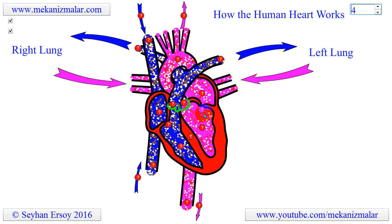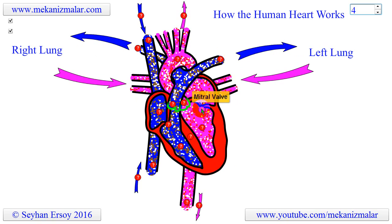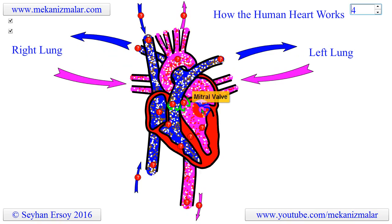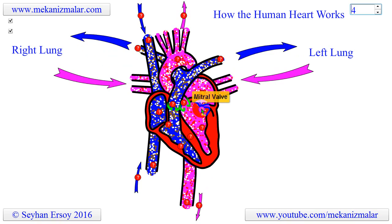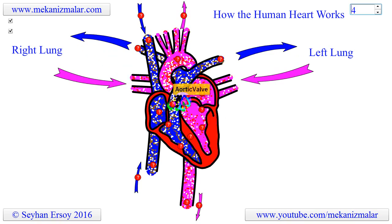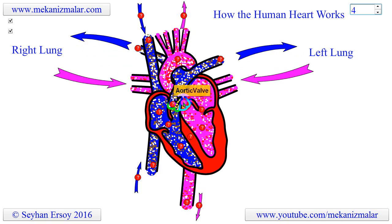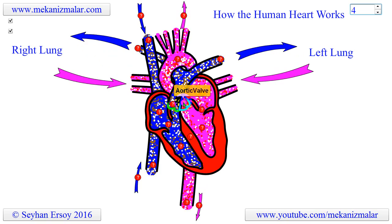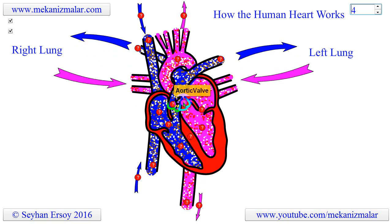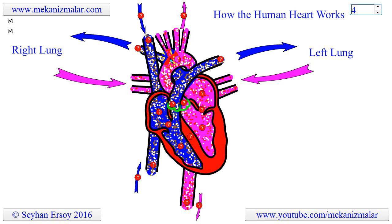The mitral valve is on the left side of the heart, between the left atrium and the left ventricle. The aortic valve is on the left side of the heart, between the left ventricle and the entrance to the aorta. This artery carries blood from the heart to the body.